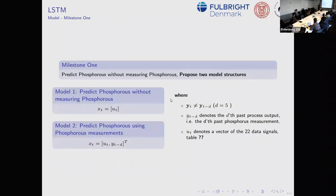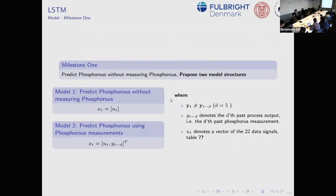We tested two model structures: one with input U representing the 22 data variables, and one with U plus the phosphorus prediction itself — including the phosphorus measurement into the model. We used LSTM because they were until recently state-of-the-art for time series, though there are now better models. We ran into some problems using attention-based mechanisms for our specific case.